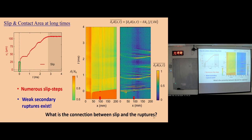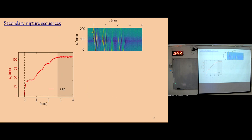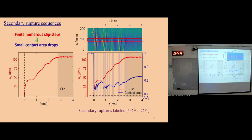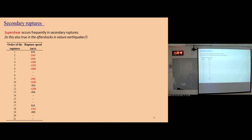So we ask: what is the connection between the slip and the ruptures? Because we measure them in the same system with the same time lock, we can put them together. The blue lines indicate contact area variation during this process. The region highlighted is exactly where the slip happens or is measured. Looking at the ruptures, we can label all the secondary ruptures. We find something interesting: all these finite and numerous slip steps are actually directly correlated with the contact area drop.